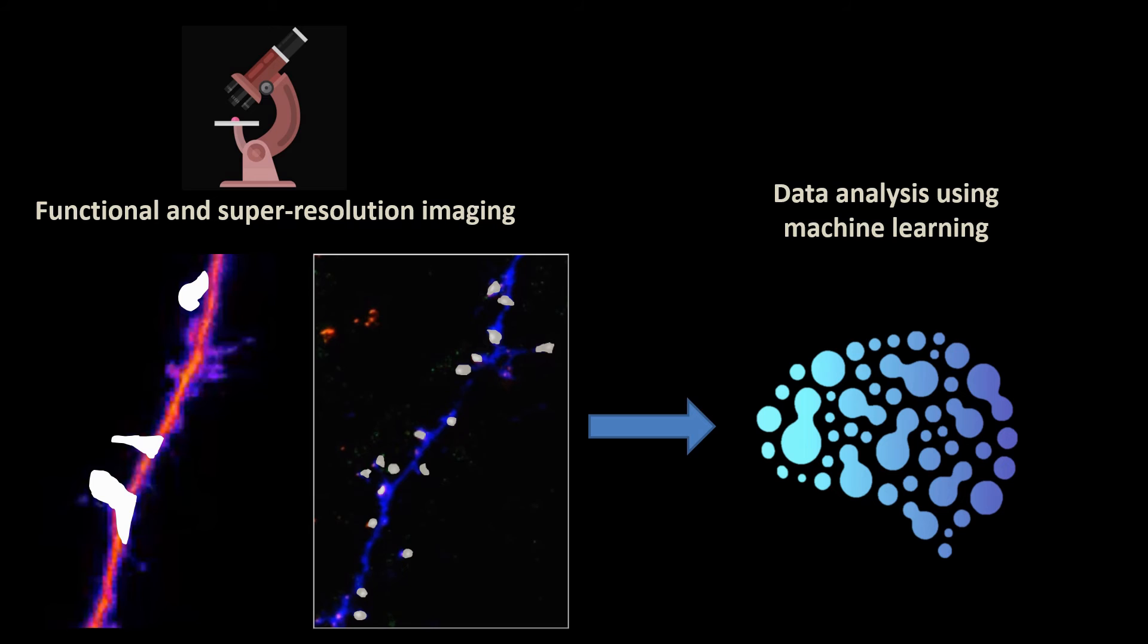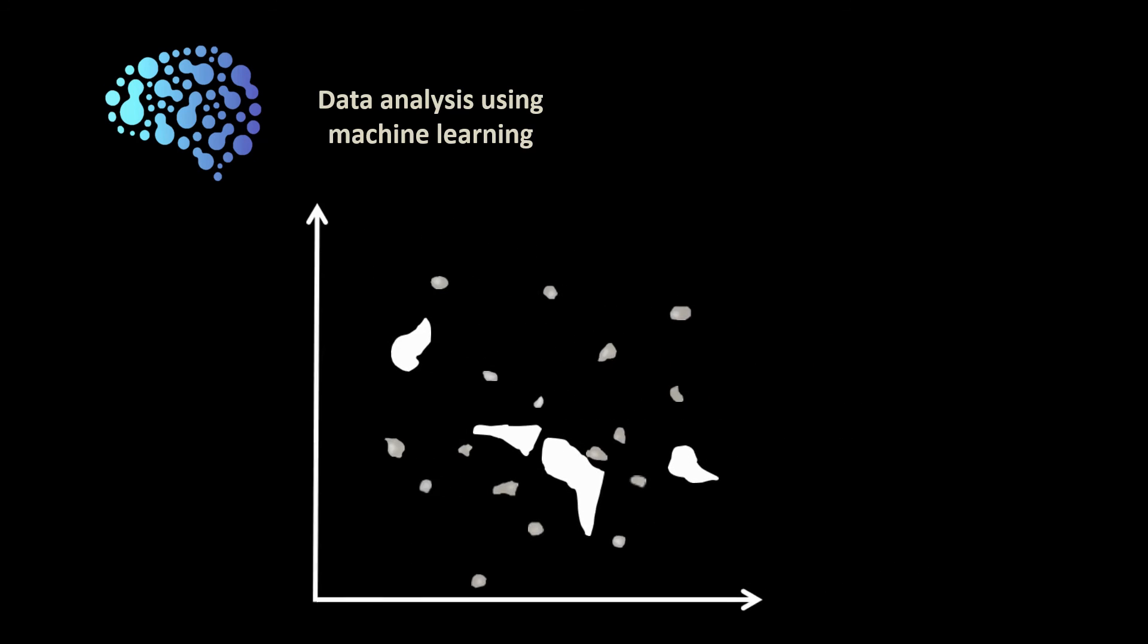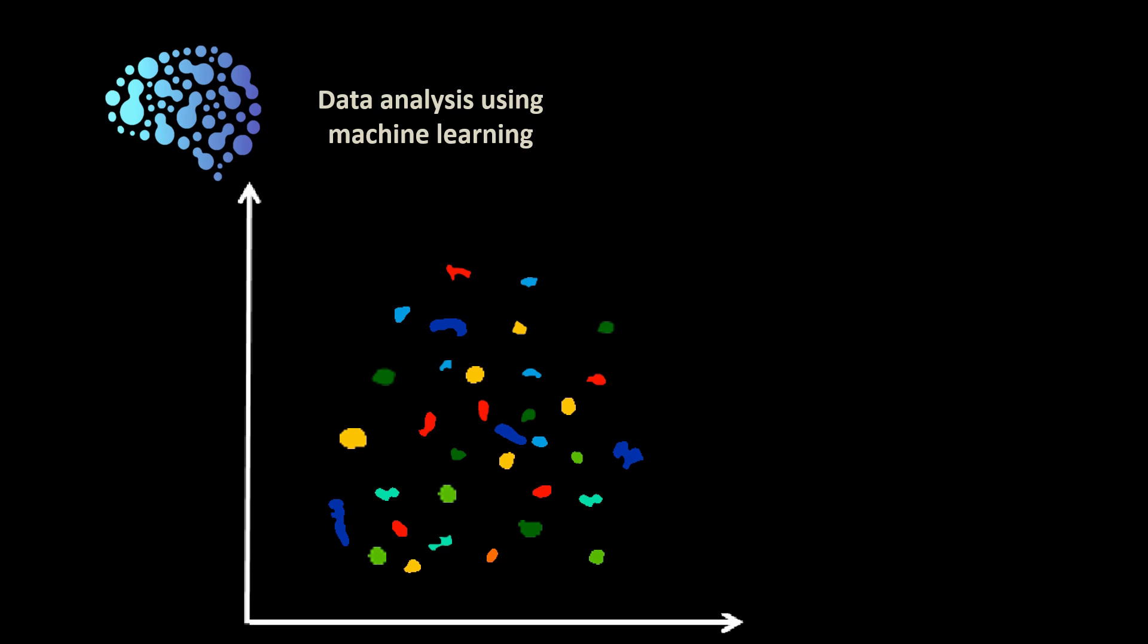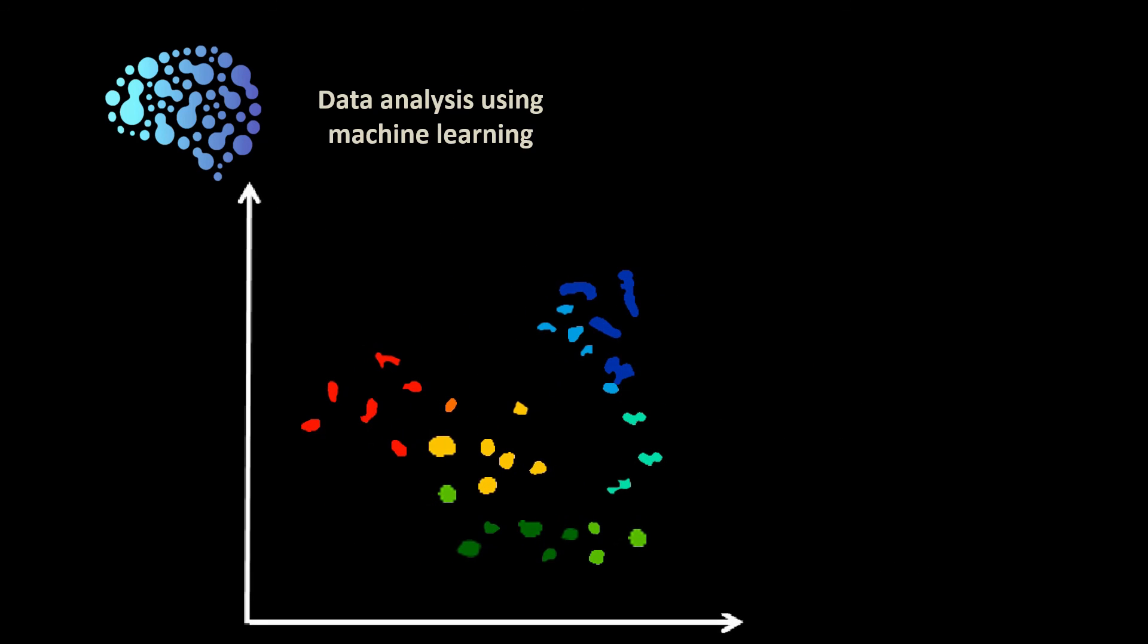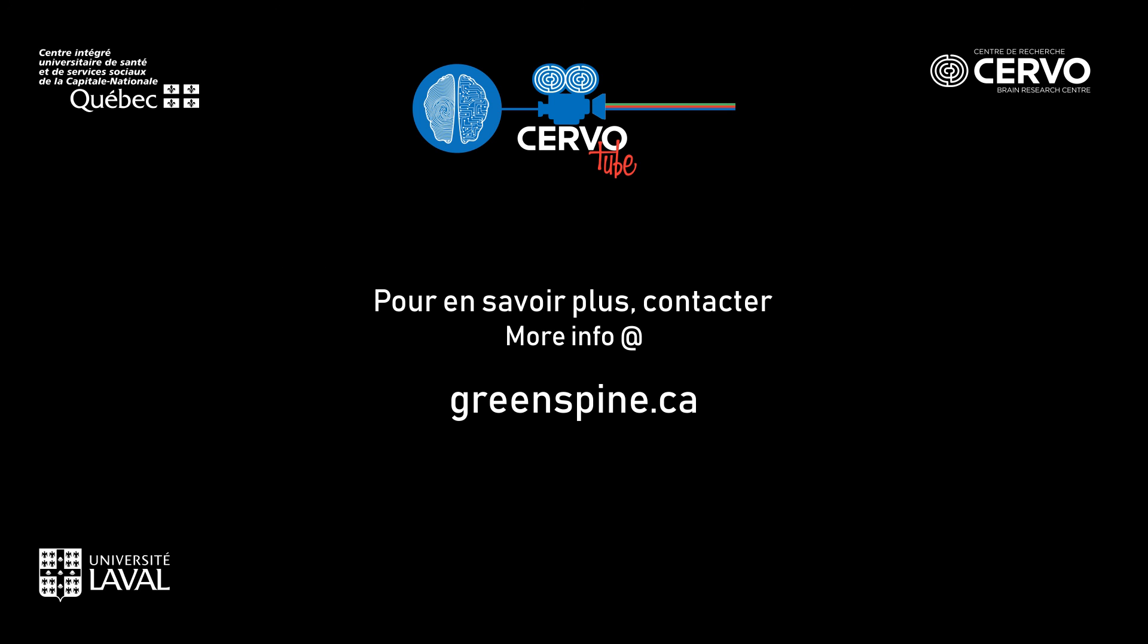we use machine learning approaches to decipher the molecular strategies that neurons use to strengthen their synapses. Our observations are revealing a tremendous array of nanoscale remodeling that synapses employ in order to allow the brain to learn.